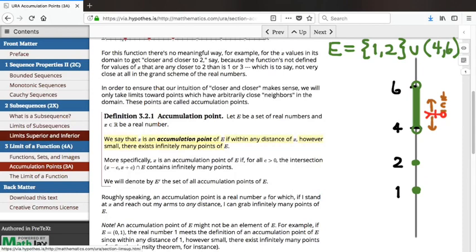What was your hypothesis? Any points between 4 and 6 are going to be able to satisfy that definition. So if I'm standing at, let's say, 5.9 or something like that, then any amount that I reach out my arms, I'm going to be able to still reach infinitely many points of this set.